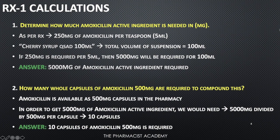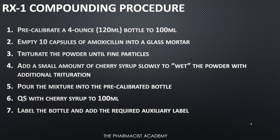If 250 milligrams is required to make 5 ml, then 5,000 milligrams will be required to make 100 ml. So 5,000 milligrams of amoxicillin active ingredient is the answer. Next, how many whole capsules of amoxicillin 500 mg are required? You take 5,000 mg divided by 500 mg per capsule and get 10 capsules. You need 10 capsules of amoxicillin 500 mg to prepare this suspension.